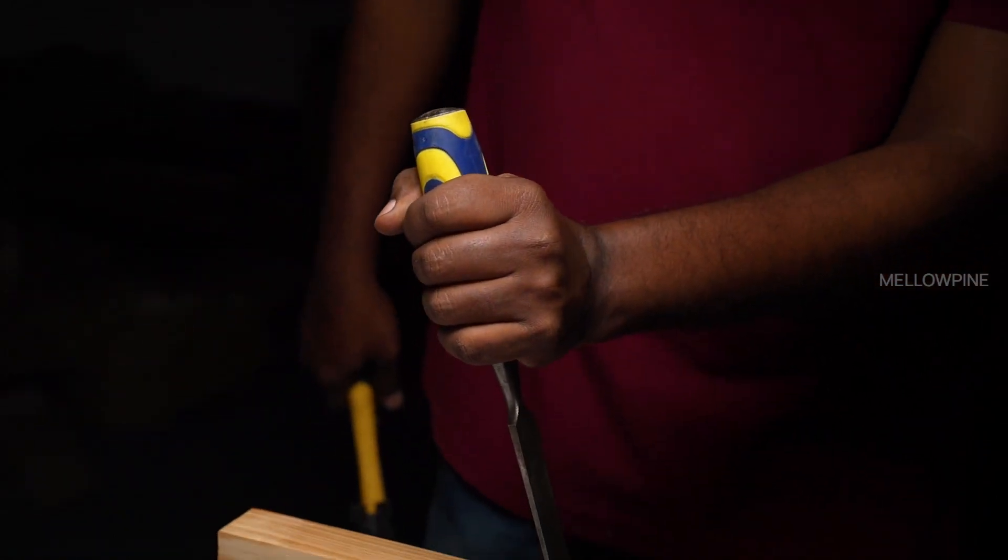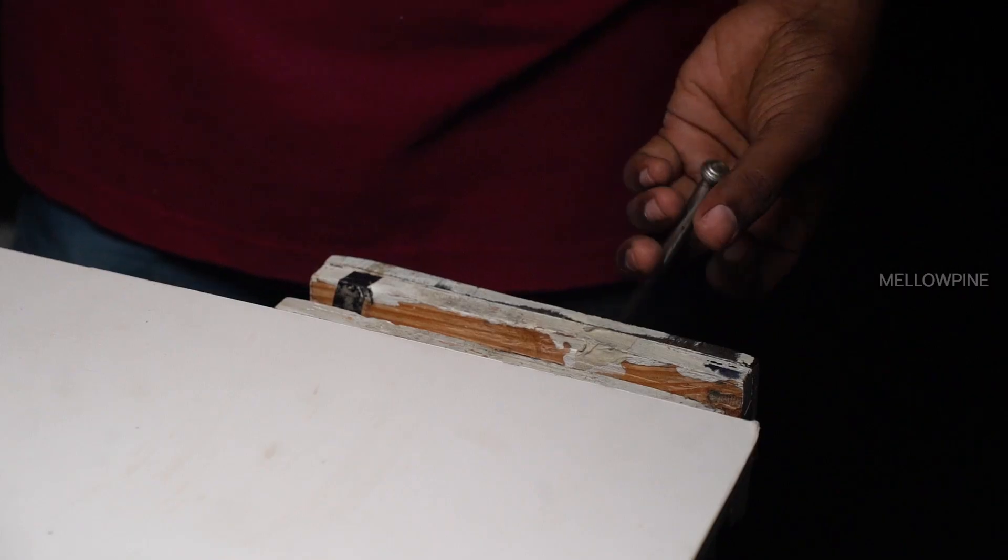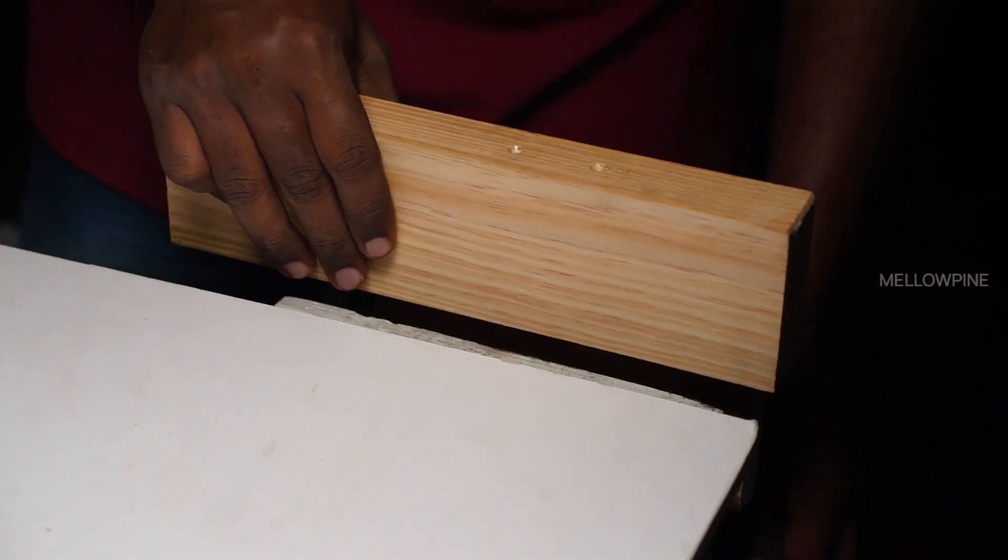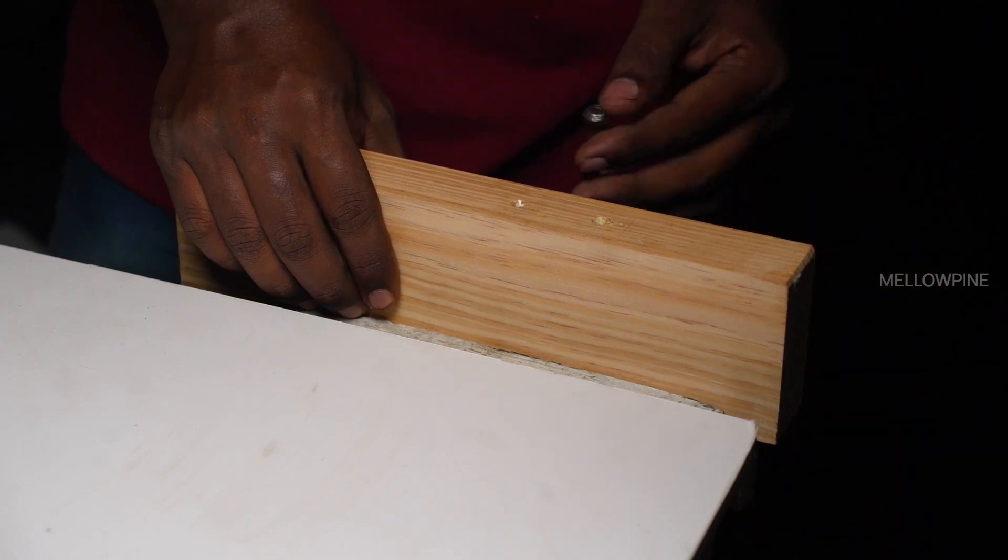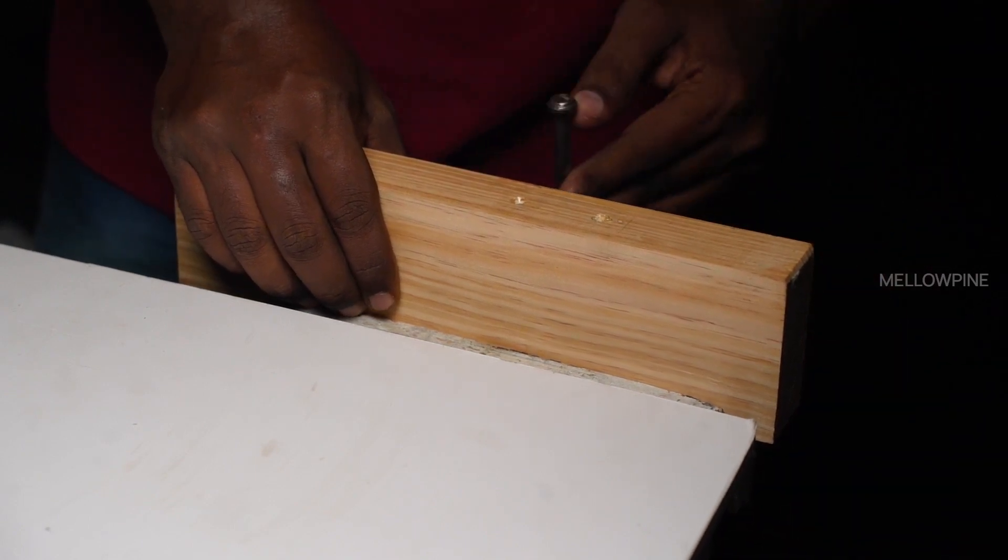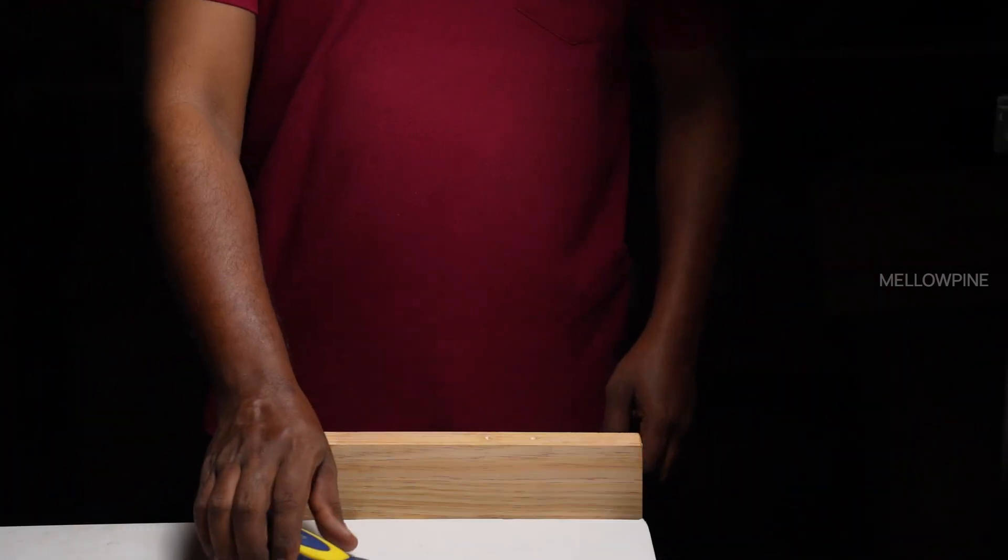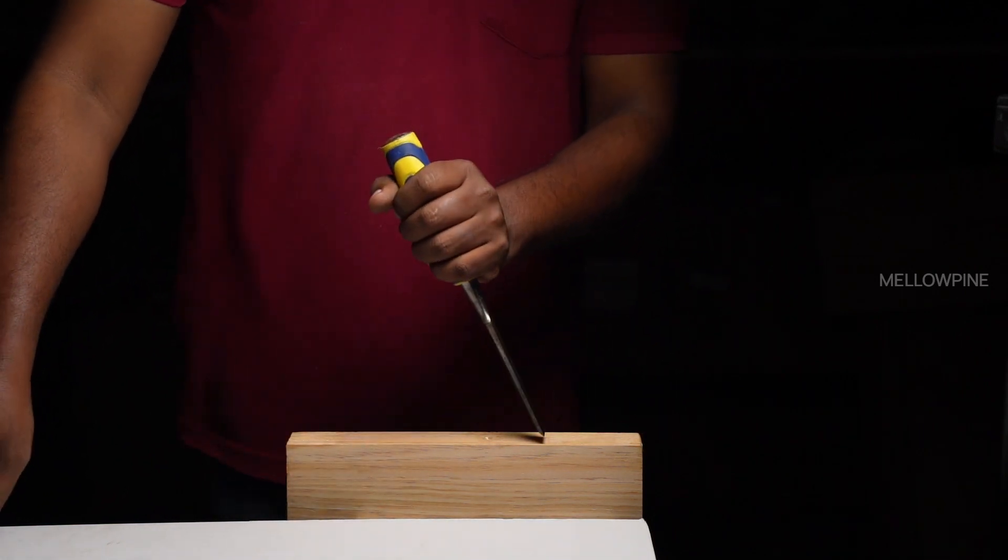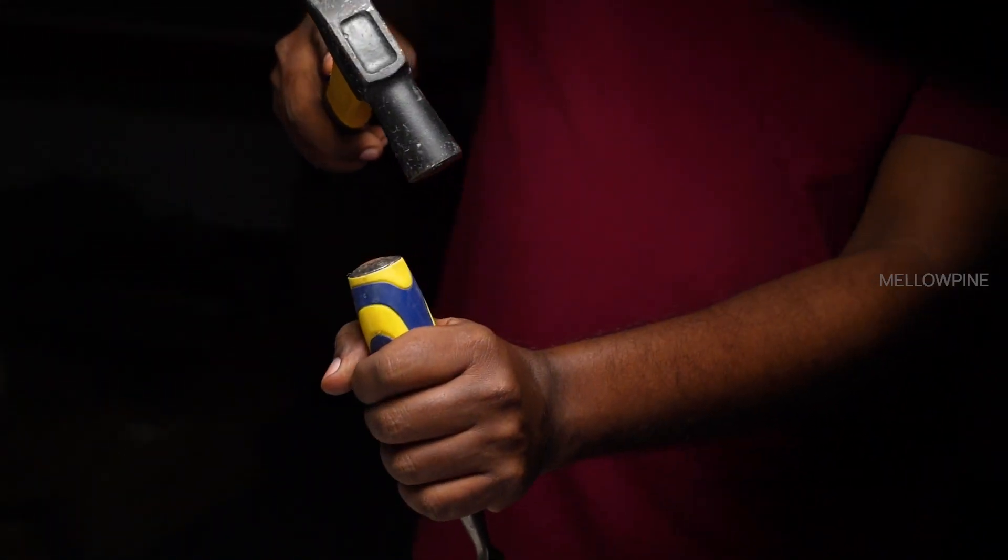Here's how to properly use a wood chisel. Prepare your work surface and secure the wood piece you'll be working on, ensuring it's firmly clamped or held in place to prevent movement. Hold the chisel firmly, gripping the handle with your dominant hand. Keep your other hand behind the blade to guide and control the chisel's movement.